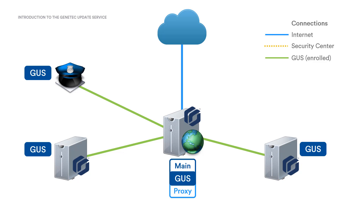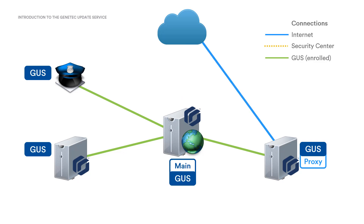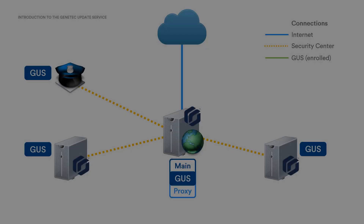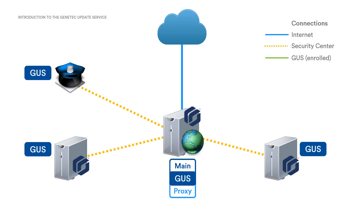Having a single server act as a proxy to download packages also helps keep your system secure by reducing the number of machines that have access to the Internet. The main GUS is configured as the proxy by default, but this can be changed to any other machine that has Internet access. There are three ways the Genetech Update Service can be in operation on a machine.